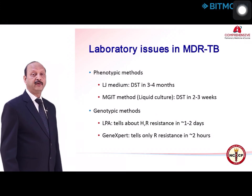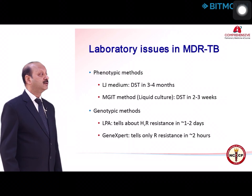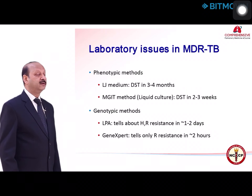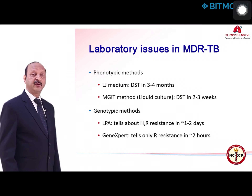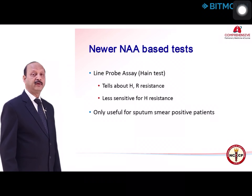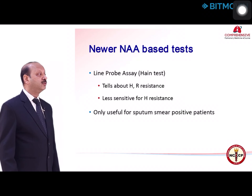Regarding laboratory issues in MDR and XDR tuberculosis, there are phenotypic methods like the Löwenstein-Jensen media method, where DST takes around 3 to 4 months. The MGIT method — liquid culture — gives DST results in 2 to 3 weeks, sometimes 4 to 5 weeks. For genotypic methods, the main ones are the line probe assay (LPA), which tells us about INH and rifampicin resistance in 1 to 2 days. The LPA is less sensitive for INH resistance and is only useful for sputum smear-positive cases.